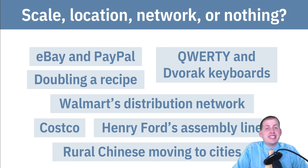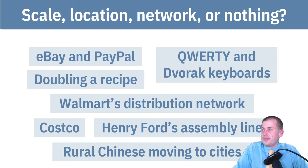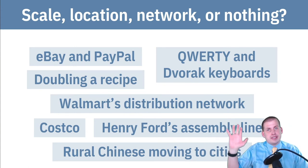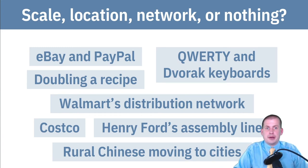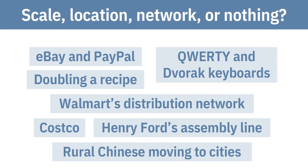To practice identifying these different effects, here are a bunch of different potential examples — economies of scale, economies of agglomeration, or network effects, or maybe nothing. Pause this video, write down what you think each example might be. Is it economies of scale? Network effects? Economies of agglomeration? Go ahead and pause the video and write these things down and see what you can figure out.